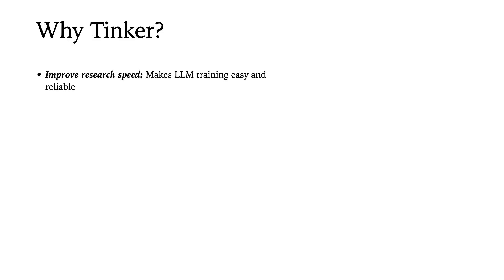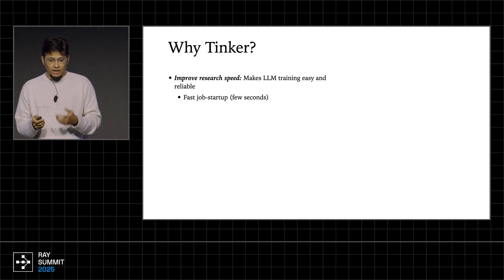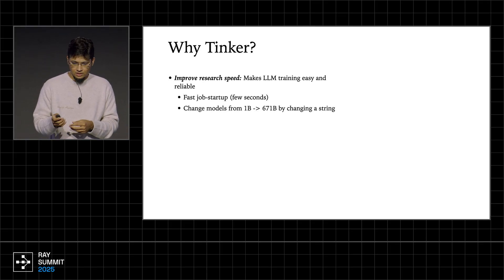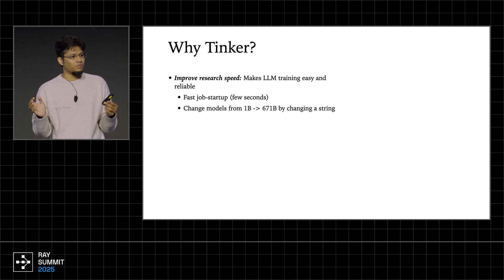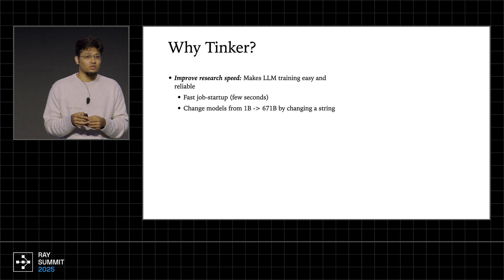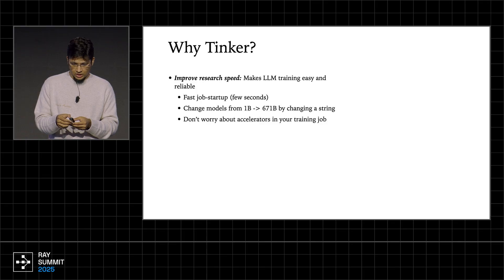Why would you want to use Tinker? It greatly improves your research speed. We've designed Tinker for our own research as well — a lot of researchers internally at Thinking Machines use Tinker for running various types of experiments. One of the biggest benefits is fast job startup; you can literally start jobs within seconds. You can change models from 1B to 671B just by changing the base model string. If you try to do this yourself with large MoE models, you have to do multi-node distributed training and it gets complicated very quickly.